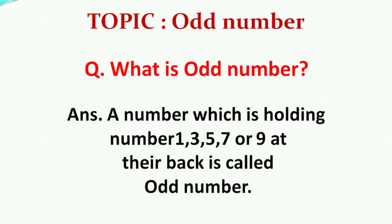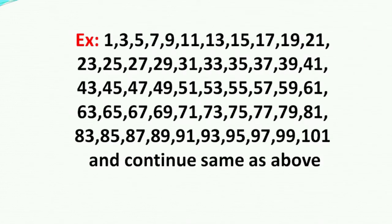Some examples of odd numbers are: 1, 3, 5, 7, 9, 11, 13, 15, 17, 19, and so on.